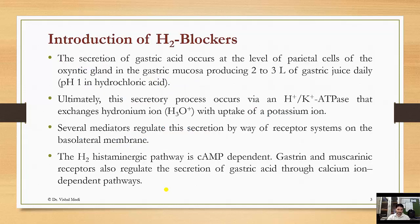The secretion of gastric acid occurs at the level of the parietal cell of the oxyntic gland in the gastric mucosa, producing 2-3 liters of gastric juice daily. The pH of hydrochloric acid is approximately 1. This secretory process occurs via an H+/K+ ATPase pump that exchanges hydronium ions with uptake of potassium ions.